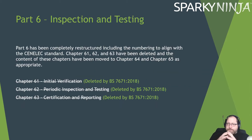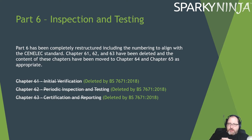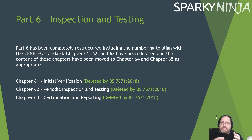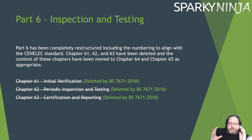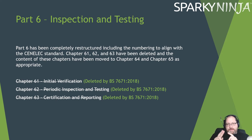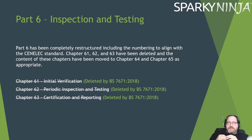It's been completely restructured to align with CENELEC now. What we had before was Chapter 61, 62, and 63. 61 was initial verification, 62 was periodics, and 63 was another chapter all about certification and reporting. What they've done is taken those three out, and we now have Chapter 64 and 65. The certification has been split and included with initial verification and periodic inspection testing respectively.